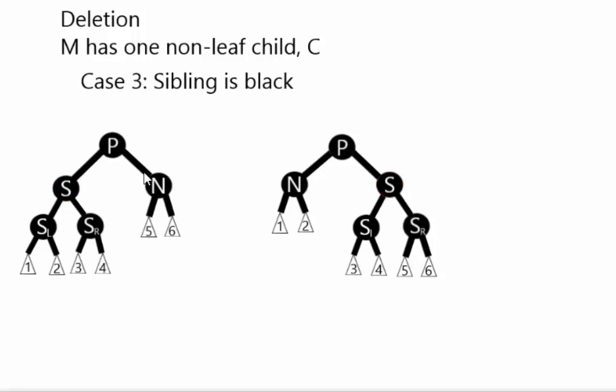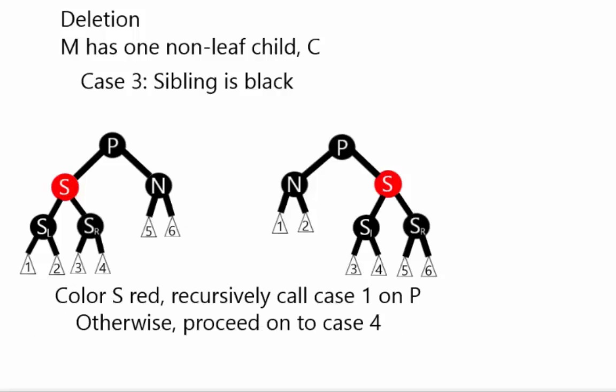Case three is where the sibling is black. We color S red, but then we need to call case one on the parent because there may be more repairs up the tree that we need to do. So this is a recursive call. Now if the sibling wasn't black in the first place, we just proceed on to case four.